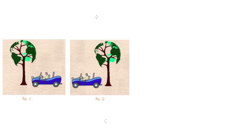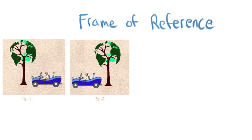Before we go any further in the lesson, it's important to talk about frame of reference. Frame of reference is very important in physics — you need a jumping-off point. Looking at figure one and figure two here, just by looking at the two pictures you can make an assumption that the car is moving. The tree serves as the frame of reference: in the first picture the car is on one side, and in the next picture the car has passed the tree and is on the other side. Frame of reference is very important and we'll use it throughout our discussion of linear motion.